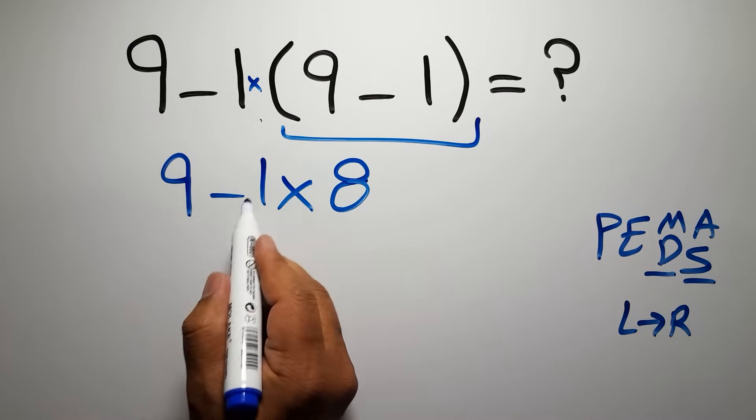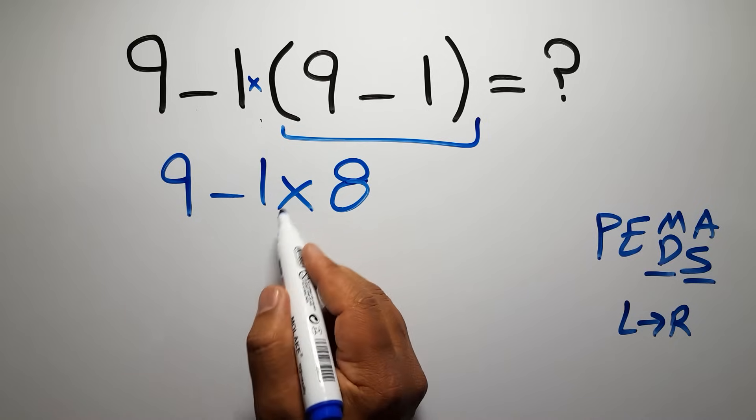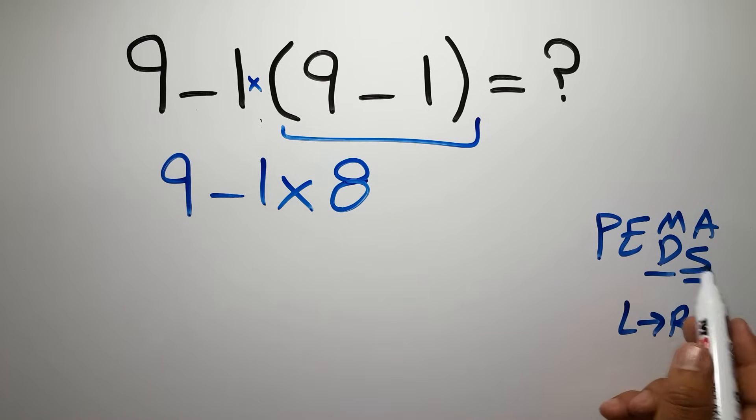In this expression, we have 1 subtraction and 1 multiplication. According to the PEMDAS, multiplication comes before subtraction.